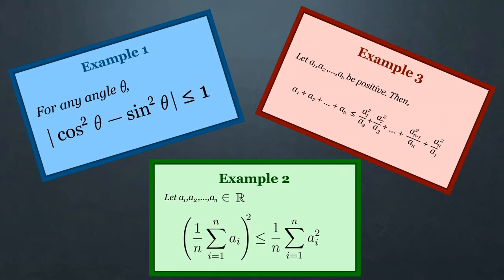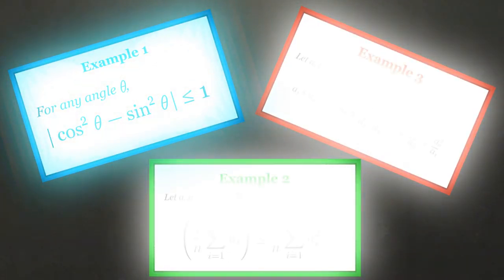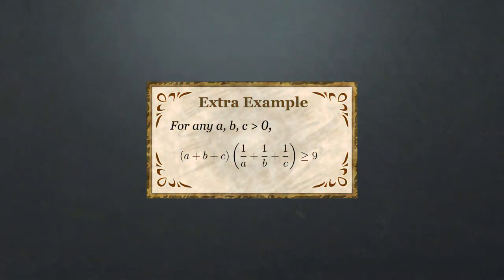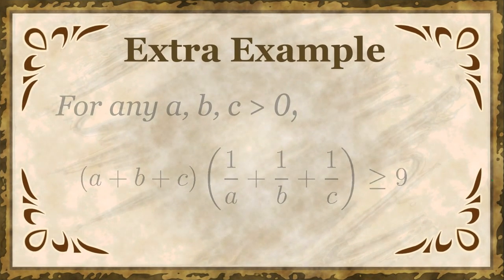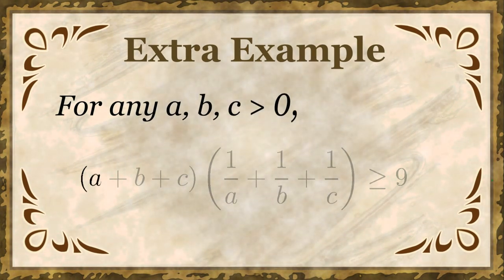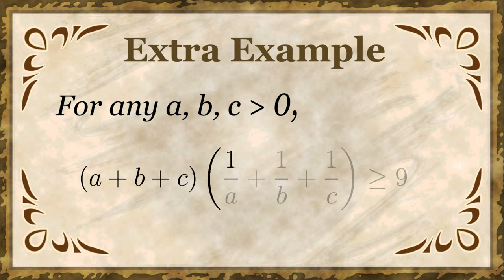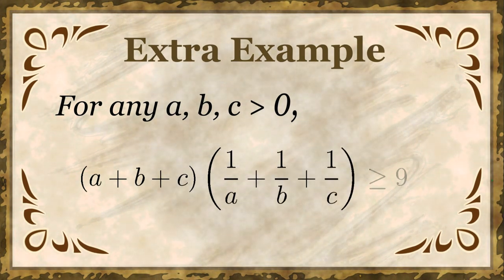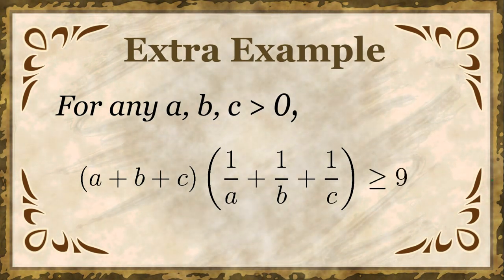Here's one way to attack a problem using Cauchy Schwarz. For any a, b and c greater than 0, a plus b plus c times 1 over a plus 1 over b plus 1 over c is greater than or equal to 9.